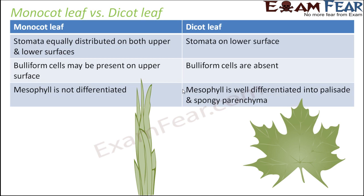In a monocot leaf, the stomata are equally distributed on both the upper and the lower surfaces. Whereas in a dicot leaf, the stomata are more concentrated on the lower surface. That is one key difference.